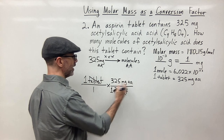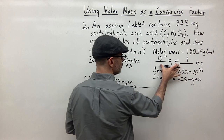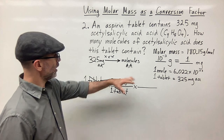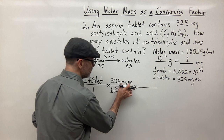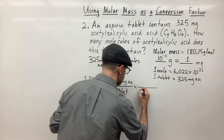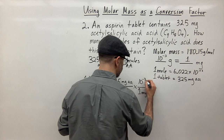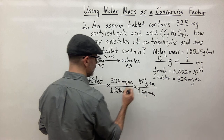Now that I have milligrams of AA, I can convert milligrams to grams using this conversion factor. I know that one milligram is equal to 10 to the negative three grams. I have milligrams on top, so I put one milligram of AA on the bottom and 10 to the negative three grams of AA on top. Milligrams of AA cancel out and now I have grams.